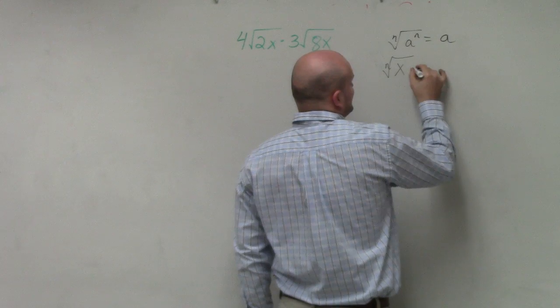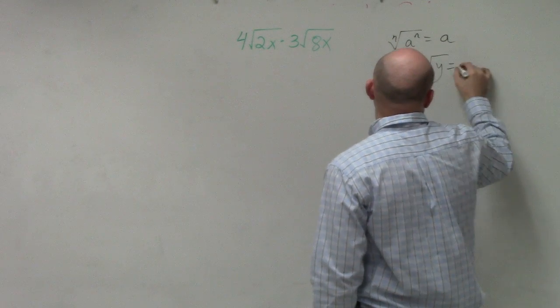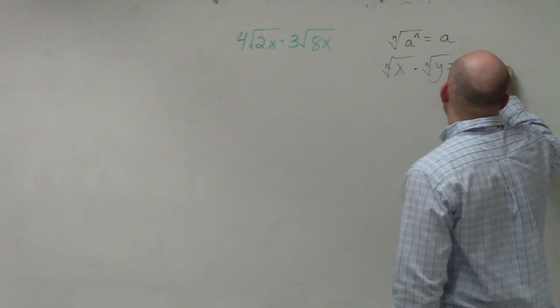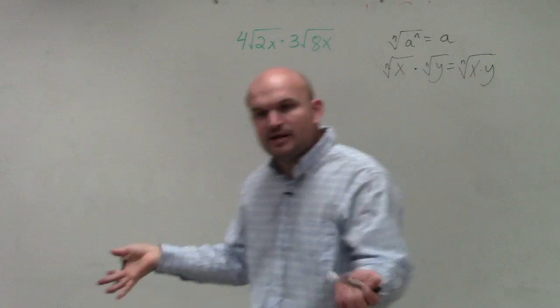And what we talked about with the multiplication is if you have the nth root of x times the nth root of y, that equals the nth root of x times y. So we can leave these under the same radical. And that was something we also talked about with simplifying. But it's a very important rule.